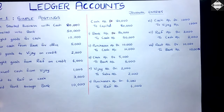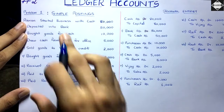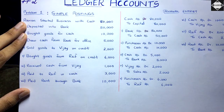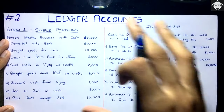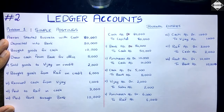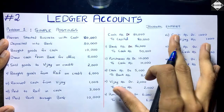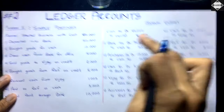So those were all the journal entries. I wanted to explain directly from the transaction into the ledger, but since you may be seeing this for the first time, I went through the proper way: from transaction to journal entry, then to ledger accounts. Later I'll explain how to go directly without writing journal entries. Now let's see how to do the ledger postings of these journal entries.